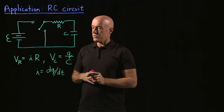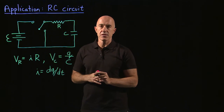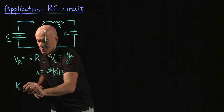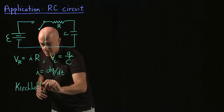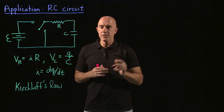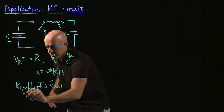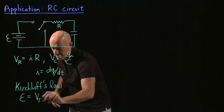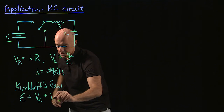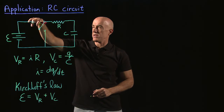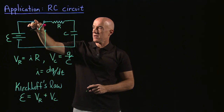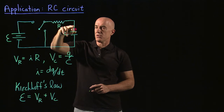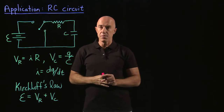These are the constitutive equations for a resistor and a capacitor. To get the differential equation, we need to apply Kirchhoff's Law, which tells us that the voltage supplied by the battery, E, is equal to the voltage drop across the resistor plus the voltage drop across the capacitor — and this is the case when the battery is connected to the circuit in a closed loop.